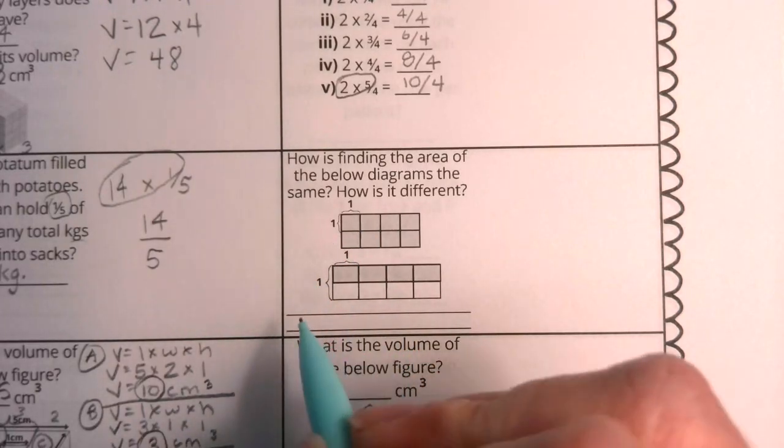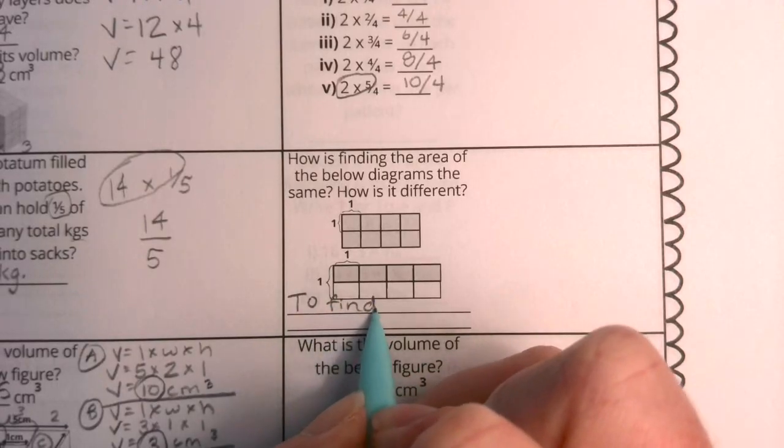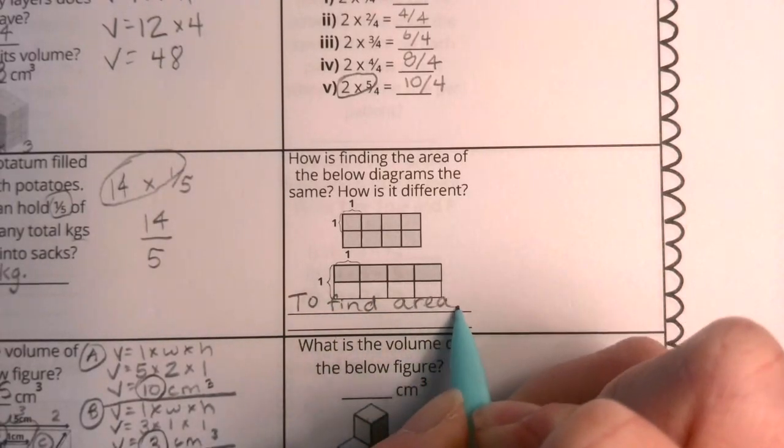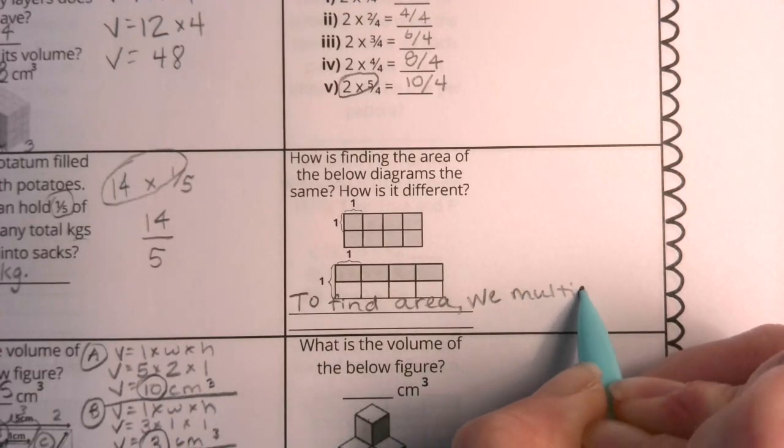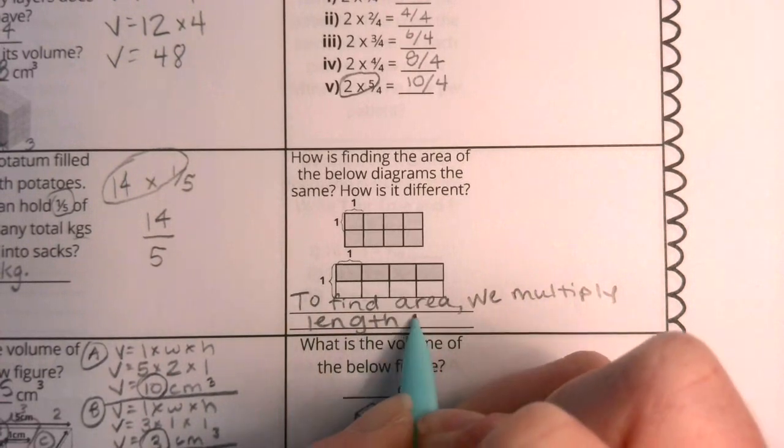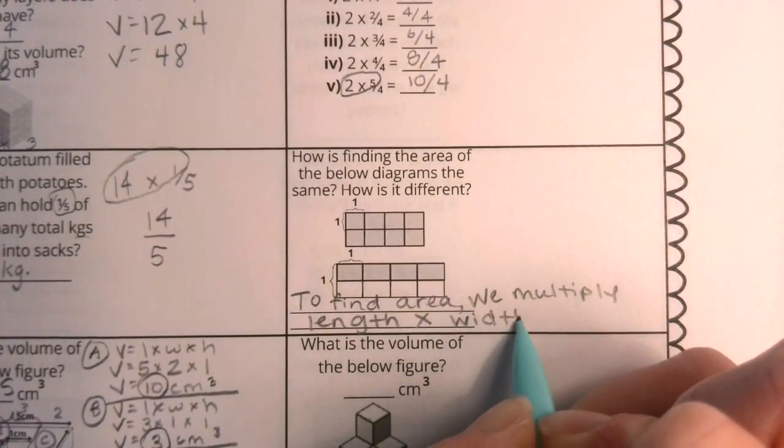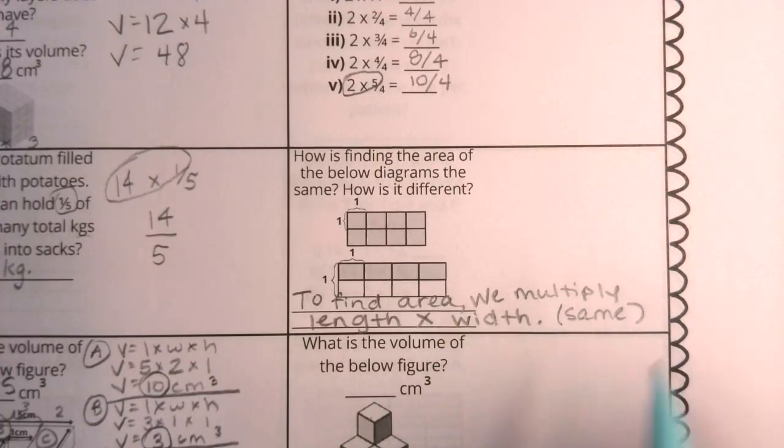So we can write that to find area, we multiply length times width. This is how they are the same. I'm going to put that in a little bit out of space. That was my statement for how they're the same.